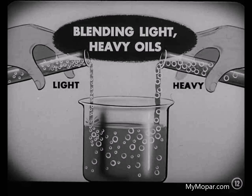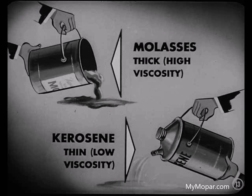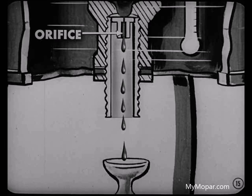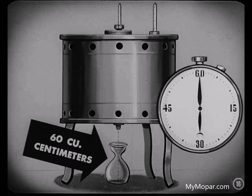Tell Tony how that viscosity is determined, Mac. Good idea. You see, Tony, viscosity is a measure of oil thickness or body. Molasses, for example, is thick — it has a high viscosity and flows slowly. Kerosene is thin — it has low viscosity and flows freely. A device known as a viscosimeter is used to measure oil viscosity. It's simply a tank containing a temperature-controlled liquid. In the center of the tank is a vessel that can hold a certain amount of oil. At the lower end of the vessel is a standard-sized orifice through which the oil flows while the viscosity test is being made.